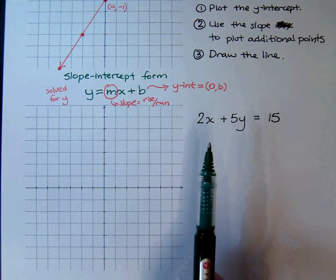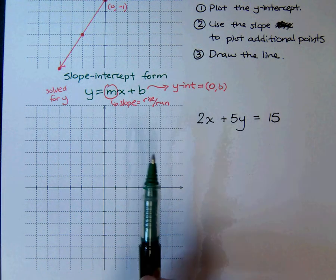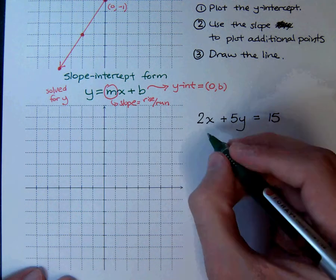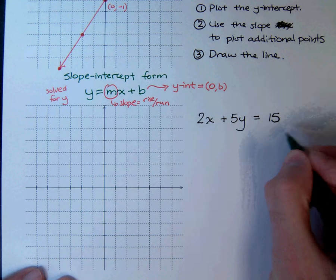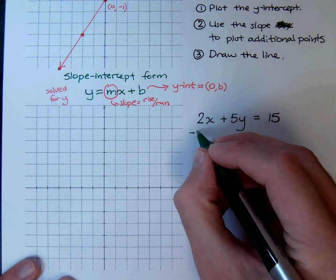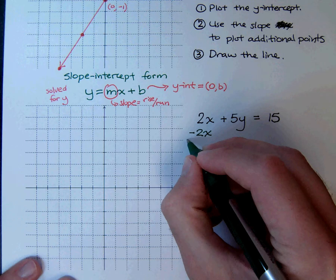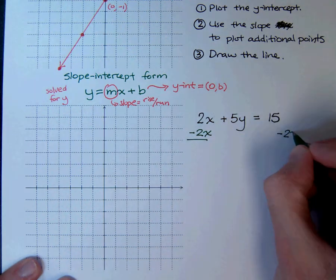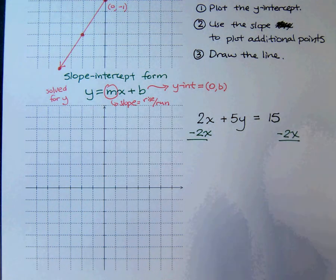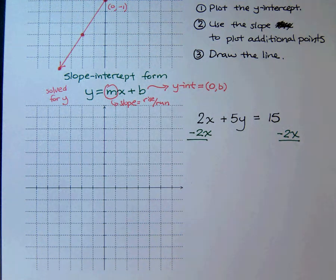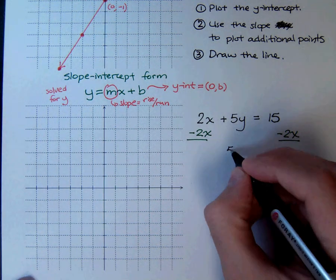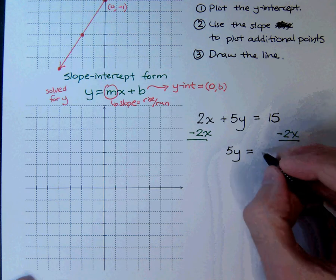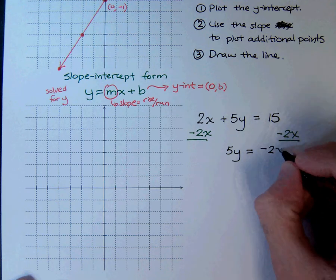So what are the steps that we take to get y by itself? Well, the first thing we have to do is move the x term to the other side by using the addition property. So I'm going to subtract 2x from the left and subtract 2x from the right. Now when I do this, I'm left with 5y equals negative 2x plus 15.